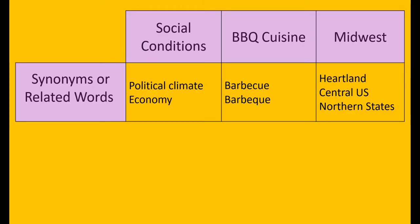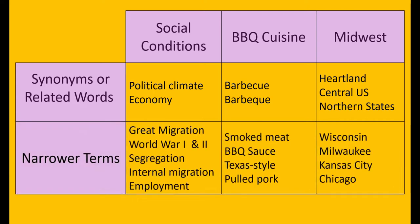Next, zoom in on these concepts and brainstorm terms and phrases that are more specific than the concepts you started with. These are called narrower terms. For my topic, this could look like adding terms such as world wars, pulled pork, and Kansas City.